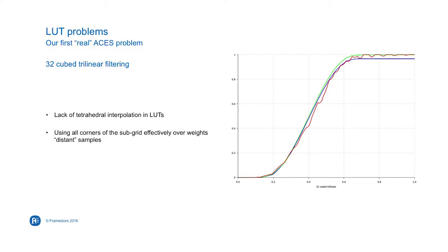I've also brought along some problems. Basically what happens when you take something apart is you find some little problems. One of the problems that we've seen a lot of is relating to the lookup tables. When you have the output device transforms and everything bundled into CTL, everything's great. But when you have to bake them out as files and use them in real tools, you get a bunch of different artifacts.